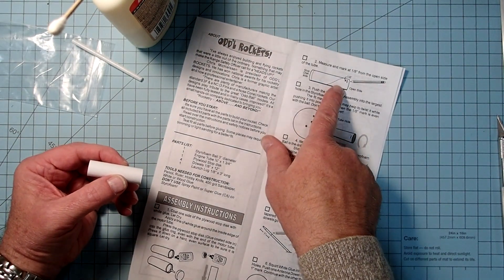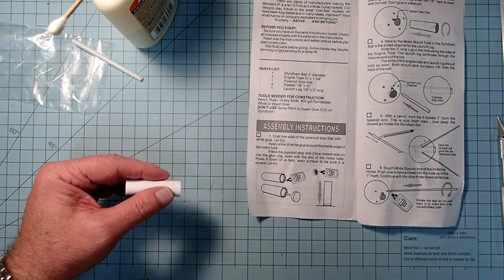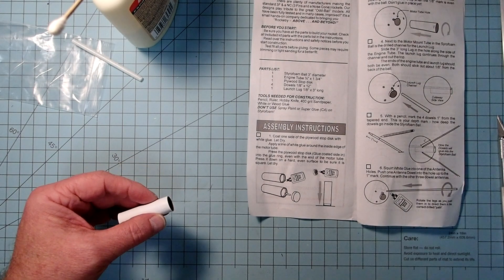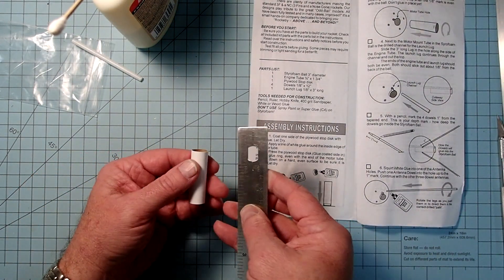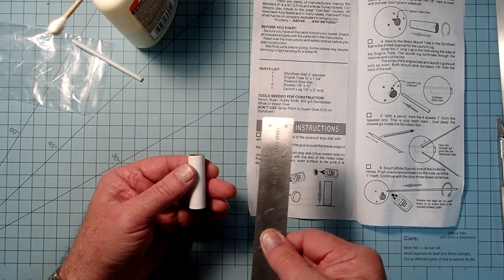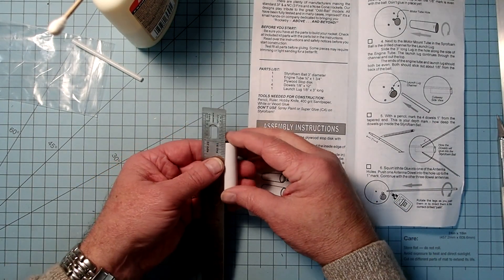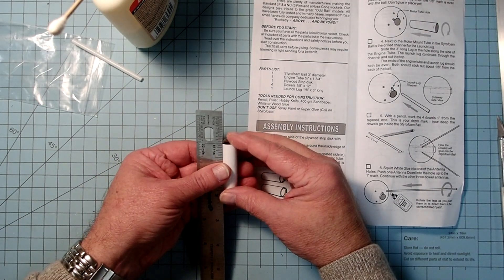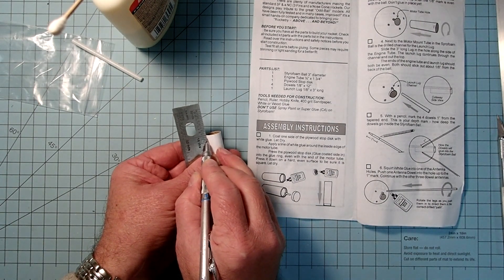And then we'll come over here to step two where we need to measure and mark one eighth of an inch from the aft end. So just take a pencil and make a little mark right there.